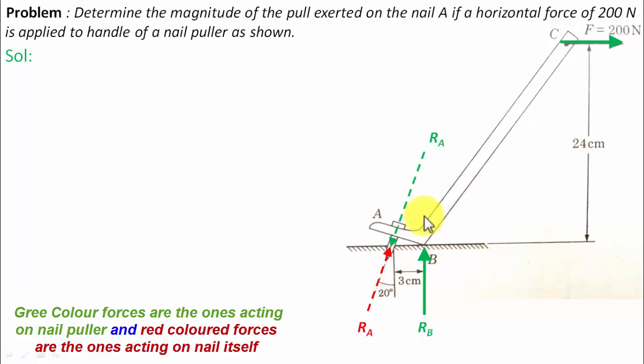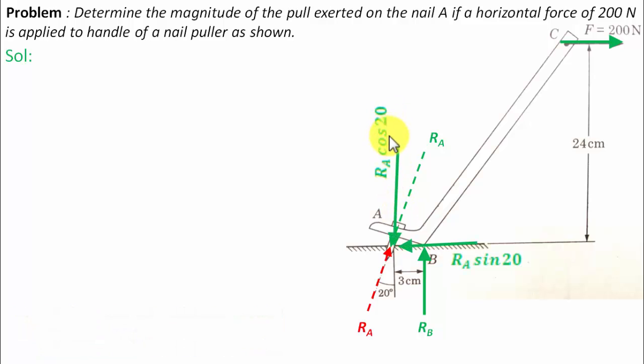Now this red colored force is on the nail because of this nail puller, and this green colored force is on the nail puller because of the nail. This can further be divided into components: ra cos 20 and ra sin 20. Obviously the angle over here shall be equal to 20 degrees.